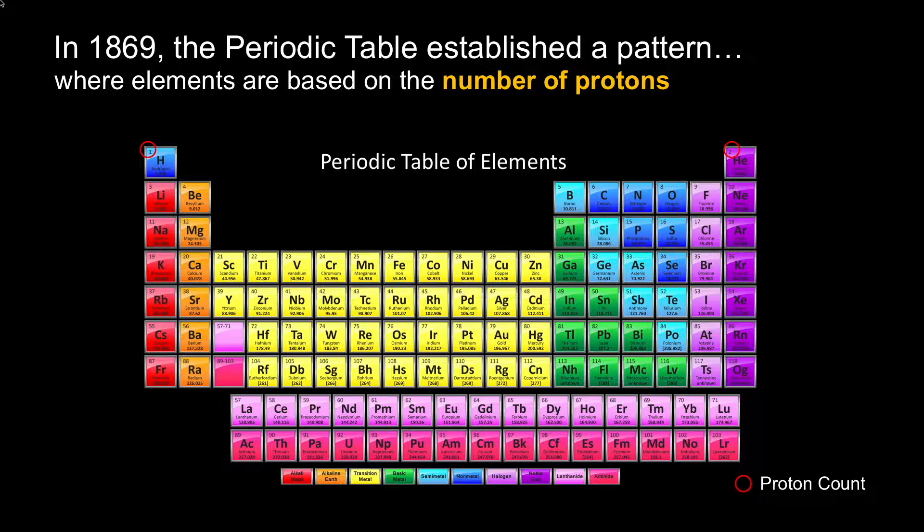In 1869, the first periodic table was established and it began to show a pattern where elements are based on the number of protons, even though the proton would be discovered many years later. The periodic table is organized based on proton count.